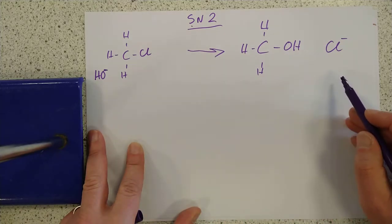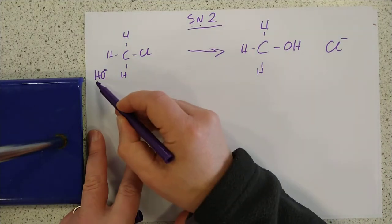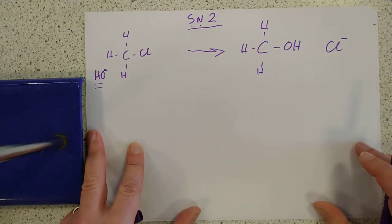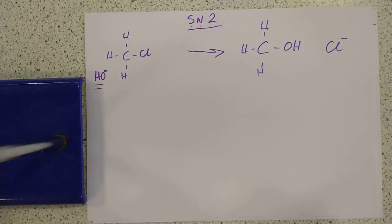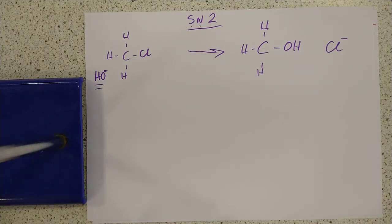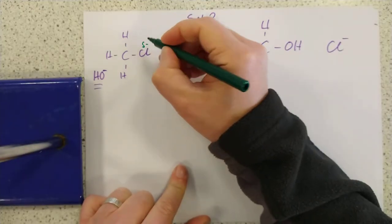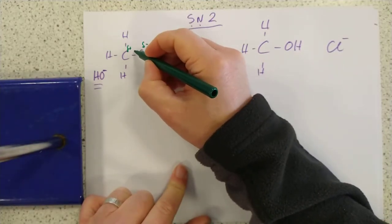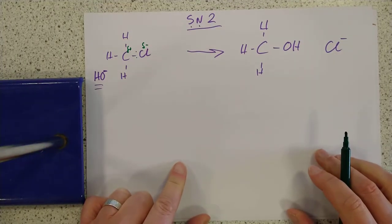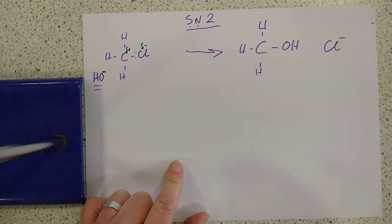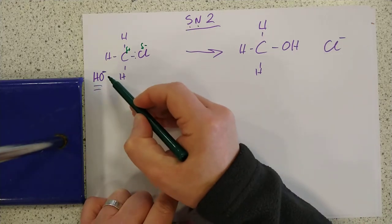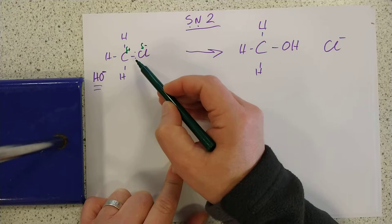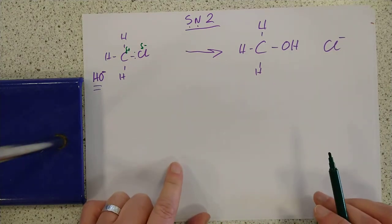This is a substitution reaction. It involves nucleophiles, which is why there's an N there. A nucleophile is something that's attracted to a positive charge — in our case, it's the hydroxide ion. What's happening here is that we have a slightly polarised carbon-chlorine bond. This is ever so slightly delta minus on the chlorine and delta plus on the carbon, with the pair of electrons a little bit towards the chlorine. The presence of the HO⁻ hydroxide ion can polarise that bond even further.